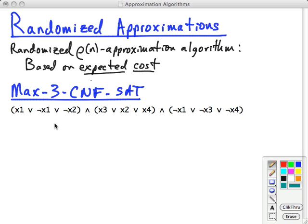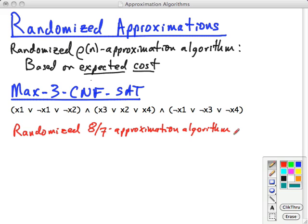The randomized algorithm that independently sets each of these variables to a value with probability one half of it being true and one half being false is a randomized 8/7 approximation algorithm. This is really kind of surprising.